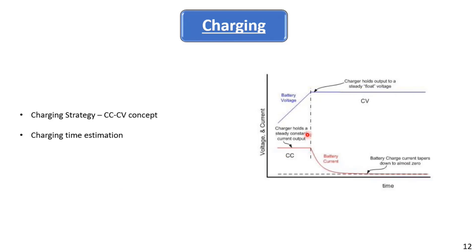In CC-CV charging, CC means a steady constant current is maintained until a certain point, after which the DC-DC converter is operated in CV mode, holding a constant voltage. The CC operation is used up to 80% state of charge to charge the vehicle at a faster rate. After 80% SoC, the charger switches to CV mode. The 80% threshold can vary by about plus or minus 2%.